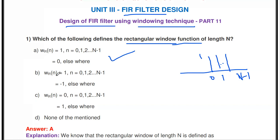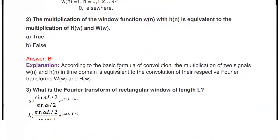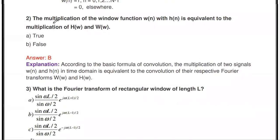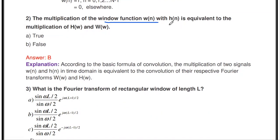Other options such as W_R(n) = 1 for n = 0 to N−1 and −1 elsewhere are not correct. The rectangular window is denoted by W_R(n), having amplitude 1 for time n from 0 to N−1. This is the correct answer.